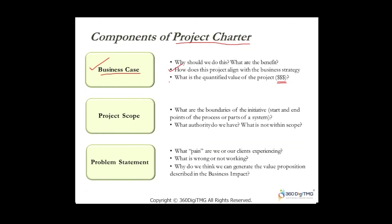The second key component is Project Scope — what are the boundaries of the initiative, the start and end. For example: 'I am going to help improve the processing time of the finance department.' You clearly define what is in scope and what other departments are out of scope. This is extremely important because otherwise there will be a lot of scope creep.